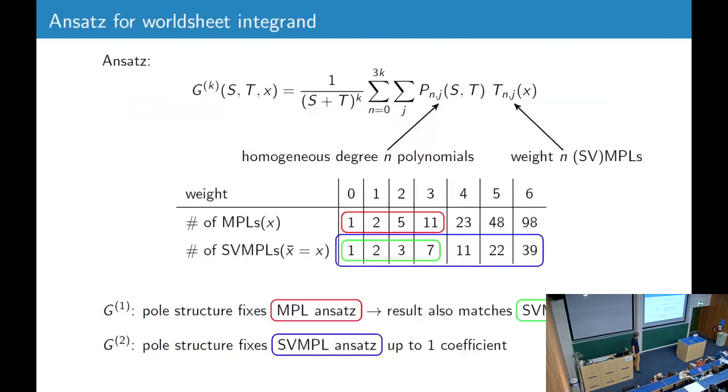Okay. So let's now do our ansatz. So for the k-th worldsheet integrand, we allow these polylogs up to weight 3k, and each of them multiplies a polynomial in S and T. So this table shows how many multiple polylogs there are at each weight up to 6, and for the single-valued version, these are evaluated on the real line, because that's where we integrate the final integral. So you see at weight 6, it's quite important to take, the ansatz is much smaller if you take the single-valued functions.